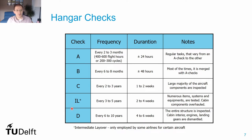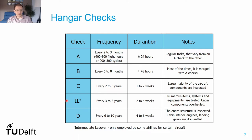There are also D checks, performed every six to ten years. These are heavy maintenance checks that include inspection of the entire aircraft structure or the dismantling of engines and landing gears. For some airlines, D checks are split into intermediate layovers — similar to what was explained for B checks — dividing the D checks into smaller blocks that are merged into C checks.